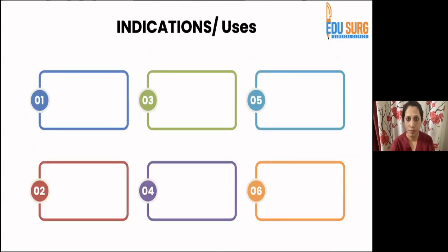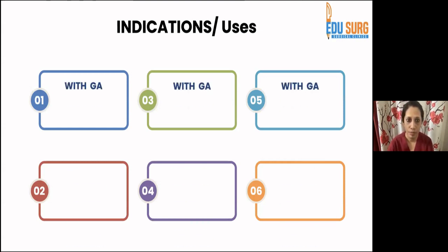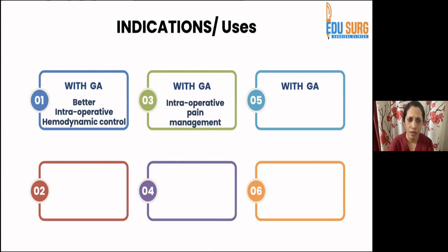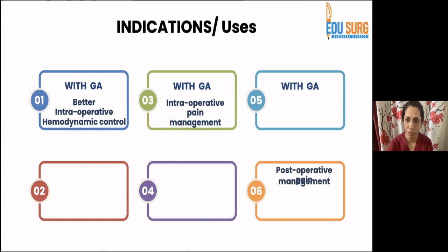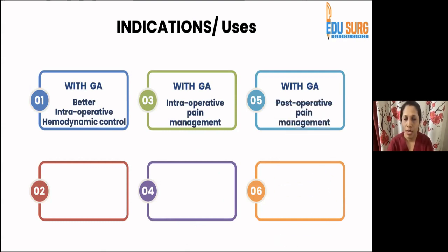Looking at usage, regional anesthesia can be used with general anesthesia or as a standalone technique. With general anesthesia, it provides better intraoperative hemodynamic control. When used as part of preemptive analgesia, it reduces the stress response and gives better stability. It can also be used for intraoperative and postoperative pain management.